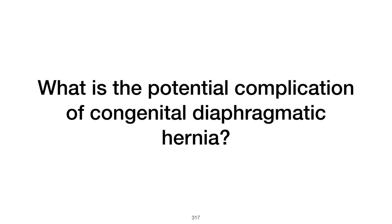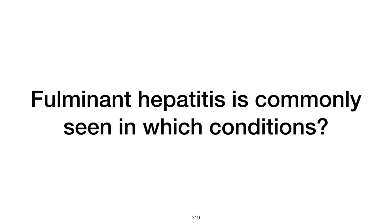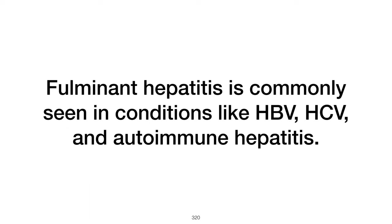What is a potential complication of congenital diaphragmatic hernia? A potential complication is pulmonary hypoplasia, where the lungs are underdeveloped due to the herniation of abdominal organs into the thoracic cavity, affecting normal lung growth. Fulminant hepatitis, characterized by rapid liver failure, is commonly seen in conditions such as hepatitis B virus (HBV), hepatitis C virus (HCV), and autoimmune hepatitis.